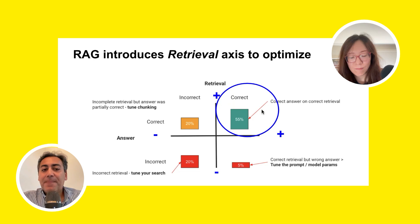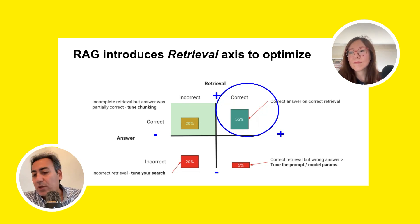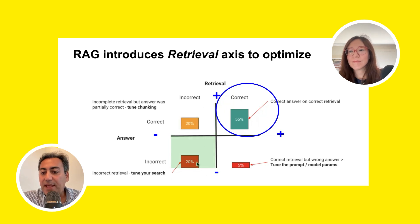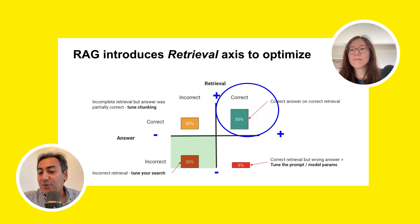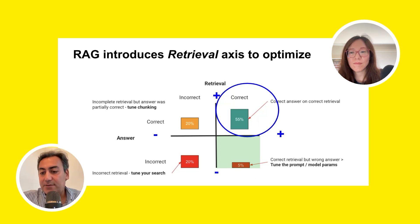The top-right area is where we have correct retrieval and the LLM generates the correct answer — that's where we want to be. The top-left is where we have correct retrieval but the answer the LLM generates is wrong. The bottom-left is where the retrieval is incorrect and therefore the answer is also incorrect. The bottom-right is when the retrieval is correct but the LLM is unable to generate the correct answer.